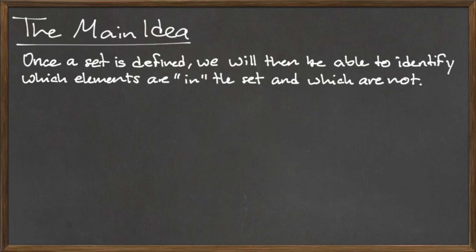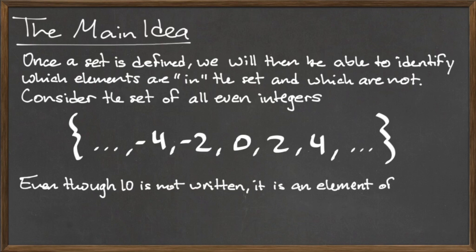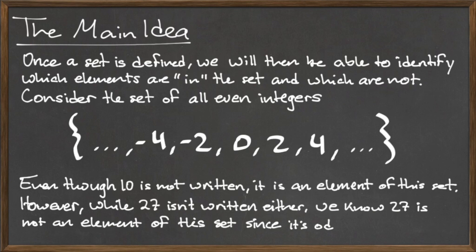For example, the set of all even integers can be written in roster form like this. Even though we have not explicitly written down the number 10, for instance, we know that 10 is an element of this set since 10 mod 2 is 0, which means that 10 is even. Likewise, we know that 27 is not an element of this set since 27 mod 2 is equal to 1, which means that 27 is odd.